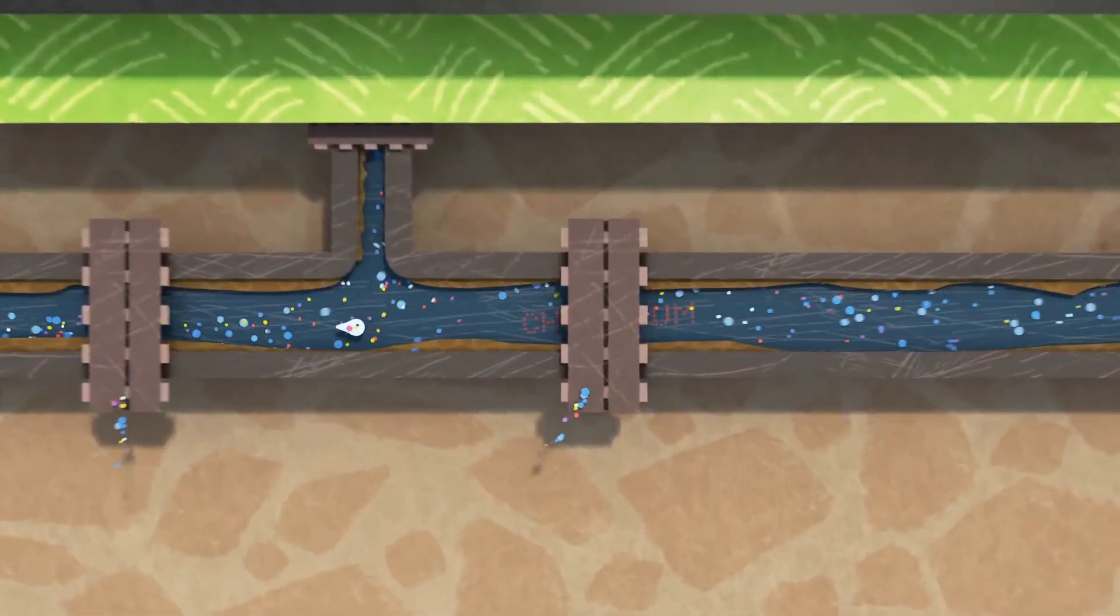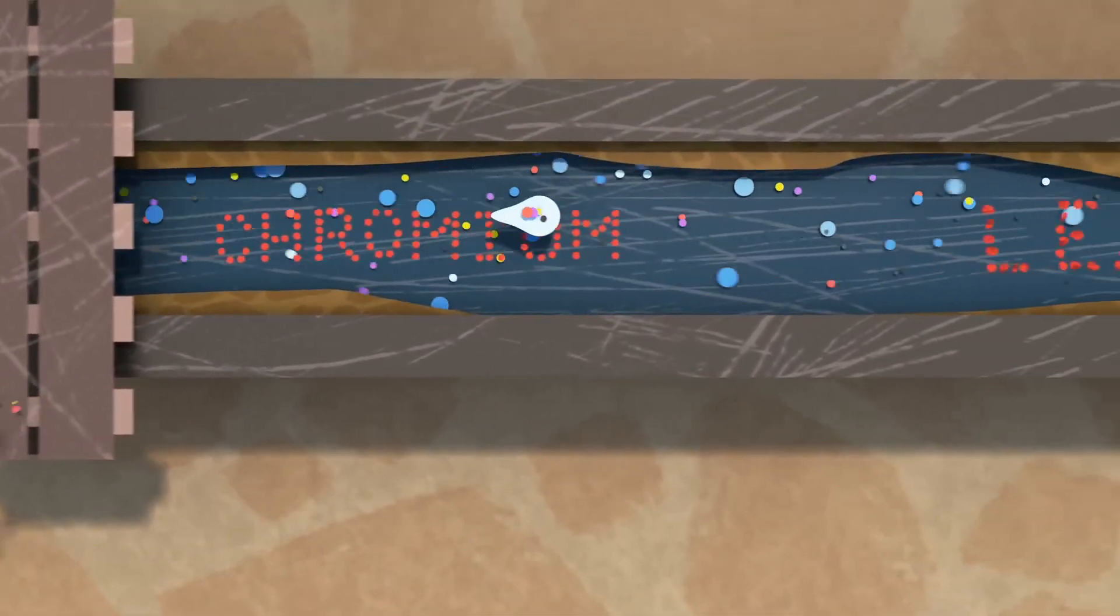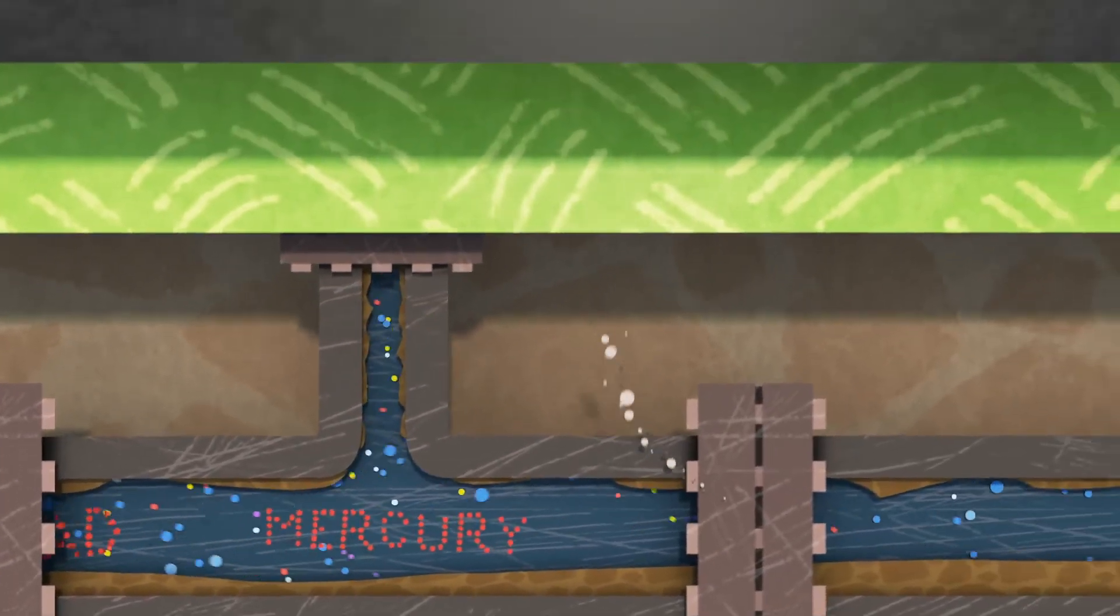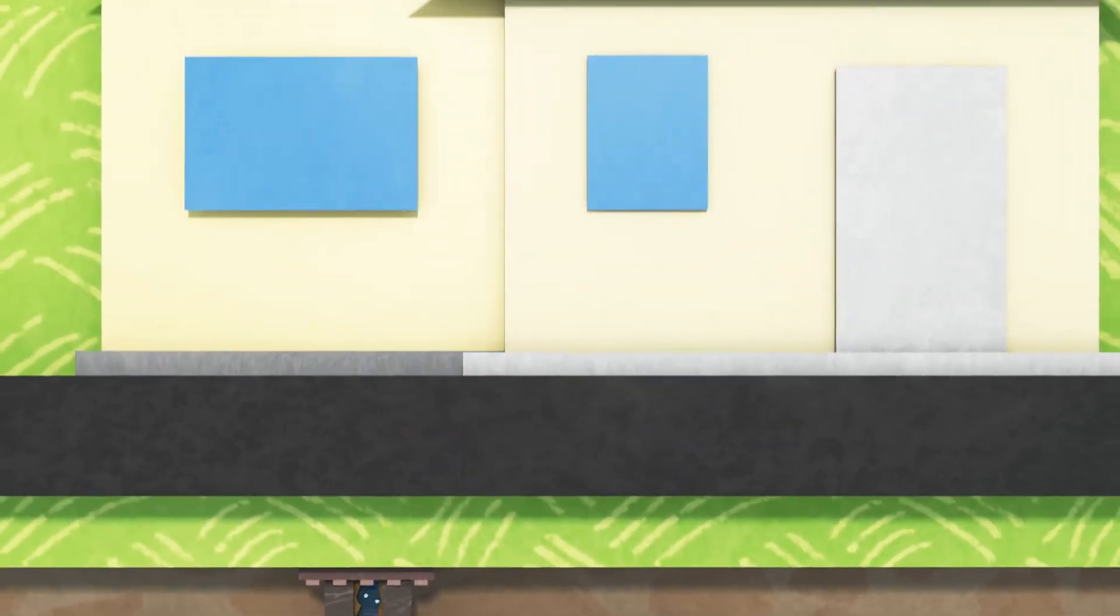As water moves from the plant to your home, it may pass through hundreds of miles of old pipes containing elements like lead and other metals that dissolve into your water.